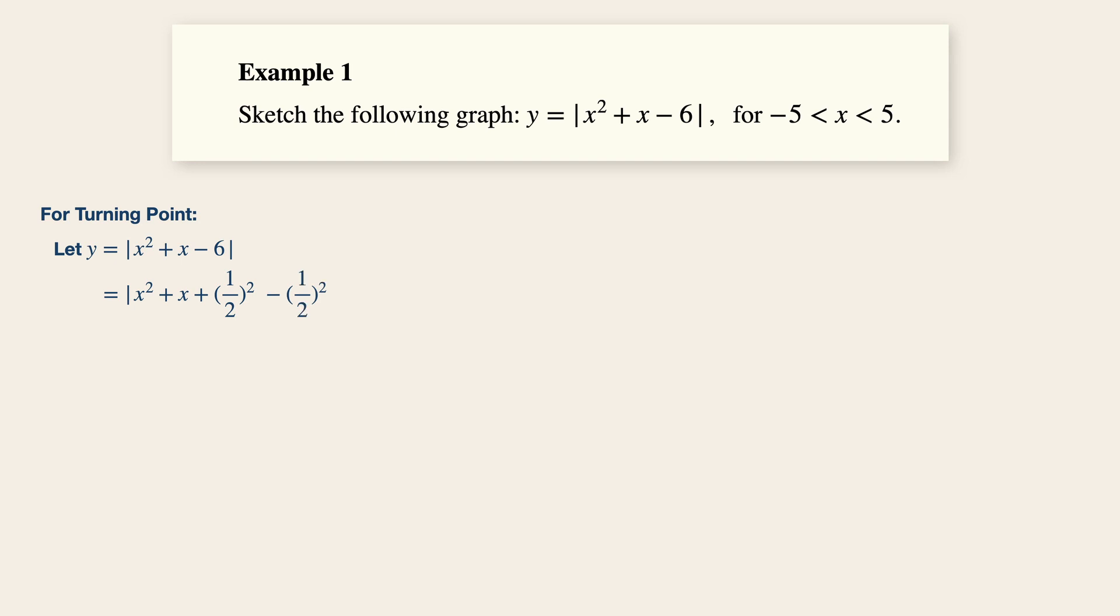Now, immediately we will have x plus half squared, minus 1 quarter, minus 6. And don't forget to include your modulus sign. And by simplifying further, we will then have modulus x plus half squared, minus 25 over 4.